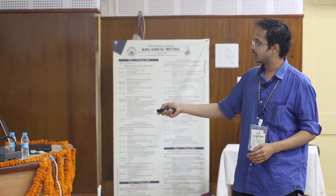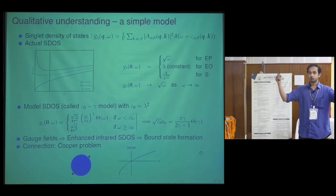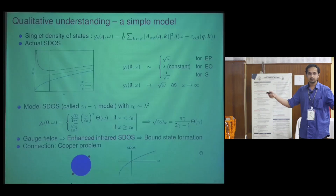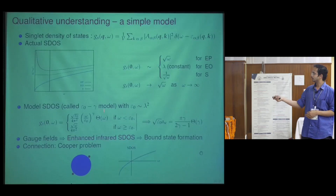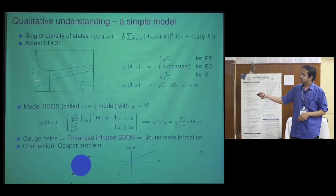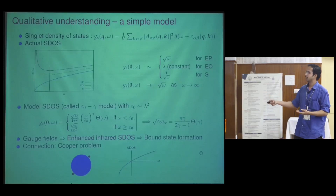Cooper showed that in the presence of a Fermi surface — which blocks the low-energy states — instead of the density of states going as root E, it starts from some constant value, so the low-energy density of states is constant. In the presence of a Fermi surface, however small, two interacting particles form a bound state for arbitrarily small attraction. With this simple model, we also understand the Cooper problem in terms of the nature of the low-energy density of states.